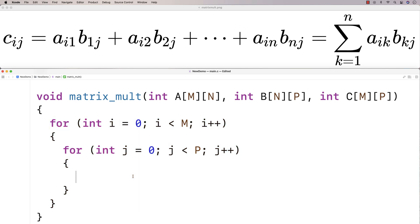Now the third loop, the innermost loop is going to be responsible for carrying out this sequence of multiplications and additions required to compute the value of the matrix C at the i-th row and j-th column. So the first thing we're going to do is actually set C at i-j equal to 0.